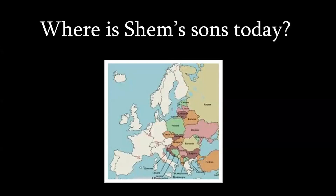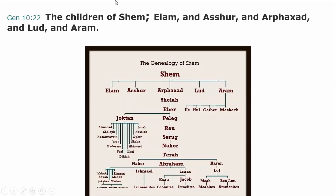We're going to talk about Shem's sons today. Shem was one of the three sons of Noah. The ancestry looks something like this. The children of Shem, from Genesis 10:22: he had Elam, Ashur which is Assyria, Arphaxad which is the line that Abraham came from, and Lud and Aram. So where are these people today? That's what we're going to talk about.